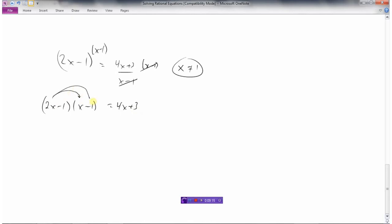So we will multiply all this stuff out. 2x squared minus 2x minus 1x plus 1, and collecting like terms here.